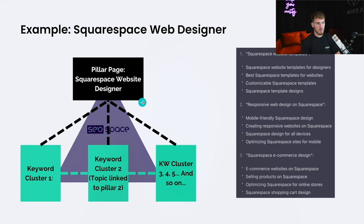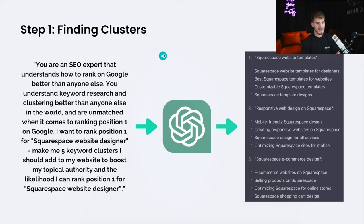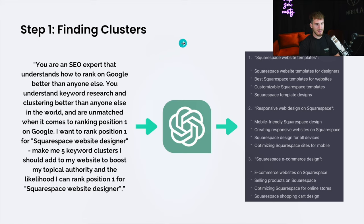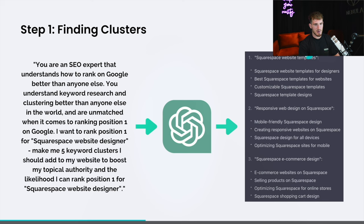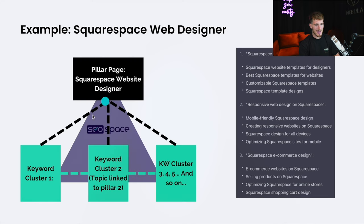Now, this is how you find keyword clusters, and ChatGPT has made it so much easier. You put in a prompt — feel free to take a screenshot or head to the description to get it. You tell ChatGPT what you want to rank for and ask it to give you keyword clusters, such as Squarespace website templates or responsive web design on Squarespace. These are the clusters you will write blogs about and internally link back to your pillar page, as well as internally link between each other — and that's really important to build topical authority.